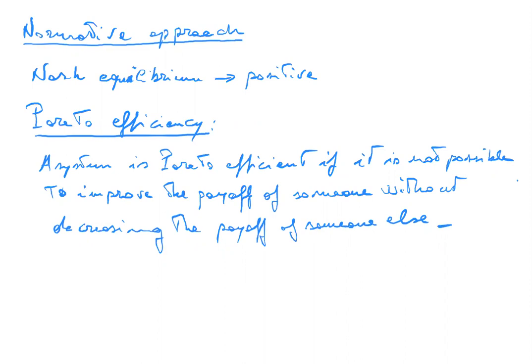Pareto efficiency is a notion of efficiency, not a notion of fairness. A Pareto efficient allocation of resources may also be very unequal — there could be some individuals that have a lot and some individuals that have very little or nothing. The only thing it means is that you cannot make everybody more happy at the same time without making someone less happy.